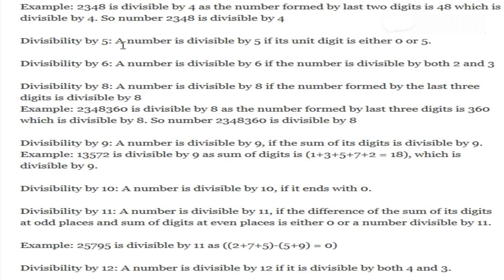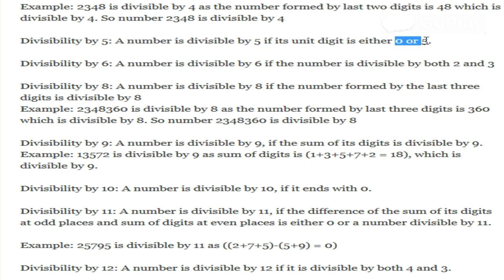Divisibility by 5: a number is divisible by 5 if its unit digit is either 0 or 5. For example, numbers like 60, 70, 75, 85, 100, 5 — if at the end there is a 0 or 5, then that number will be divisible by 5.